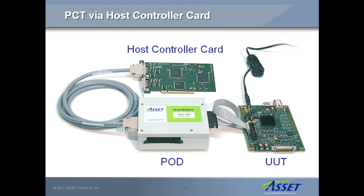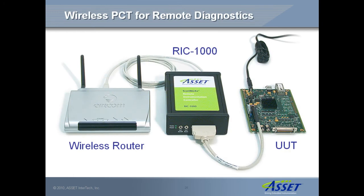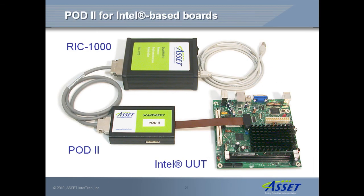When PCT is running on a host computer, there are two varieties of test controller hardware. The first is an internal host controller card in combination with an external pod that connects to the UUT. The second is an Ethernet-based external controller, for example the RIC1000 shown here. For Intel-based UUTs, an additional pod 2 would be connected between the RIC controller and the UUT.